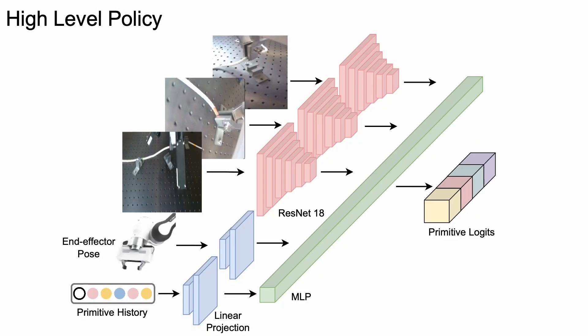Our high-level policy acts as a planner that chains the four primitives sequentially. It determines the next primitive to execute using sensory input from both the wrist and side cameras fed through separate ResNet-18 encoders combined with proprioceptive information and an embedding representing the history of primitives the robot has already executed at the current clip.